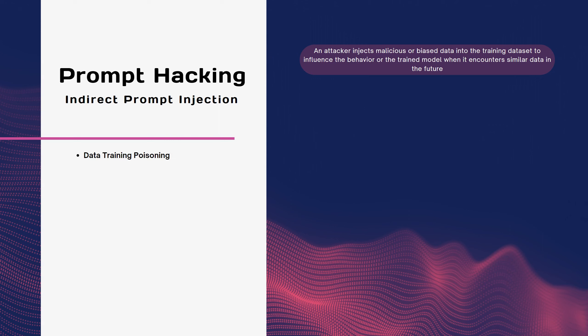Data Training Poisoning is when an attacker deliberately corrupts the training data of an LLM, creating inaccuracies, errors, or inconsistencies in the LLM's output. For example, an attacker can add, modify, or delete some data samples in the training dataset, or introduce noise, outliers, or anomalies. Data Training Poisoning can affect the quality and reliability of the LLM and potentially result in poor decisions based on faulty outputs.